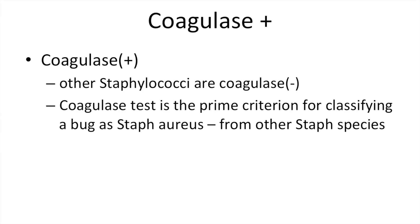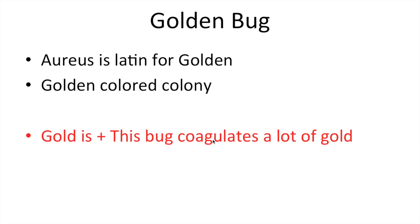Staph aureus is coagulase positive — you'll see this type of question on the exam, so you really have to have this understood. Other Staphylococcus species are coagulase negative. The coagulase test is the prime criterion for classifying a bug as Staph aureus. A helpful mnemonic: aureus is Latin for golden, and it forms golden-colored colonies. Think of Staph aureus as the golden bug — gold is positive, and it's coagulase positive.